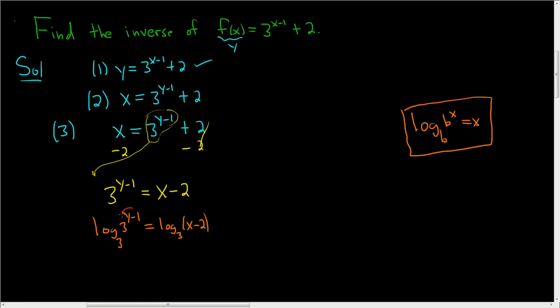And now this term here, this is our x. So on the left-hand side, we just get y - 1 = log base 3 of (x - 2). Add 1 to both sides, so we end up with y = log base 3 of (x - 2) + 1.